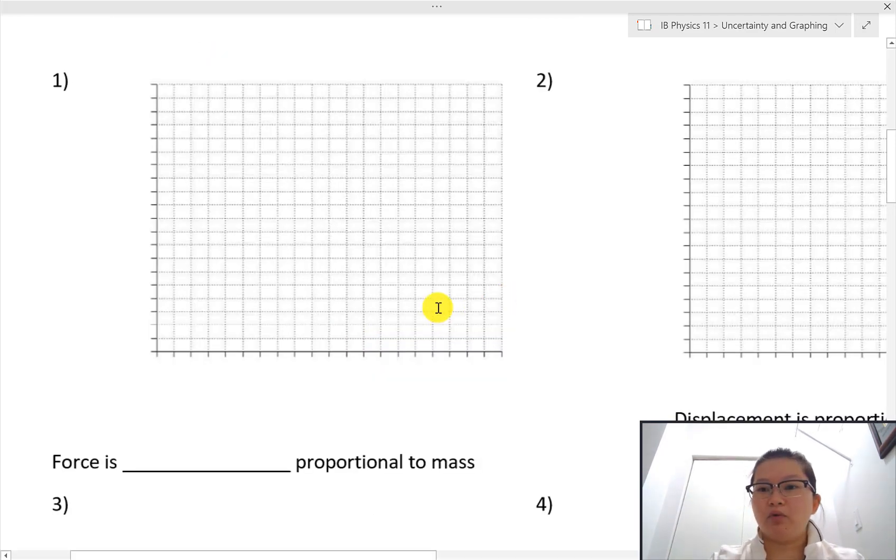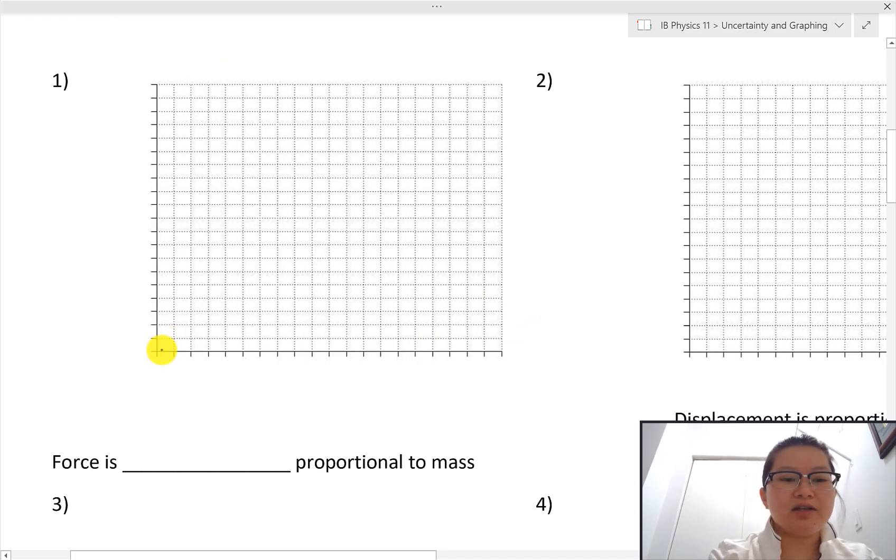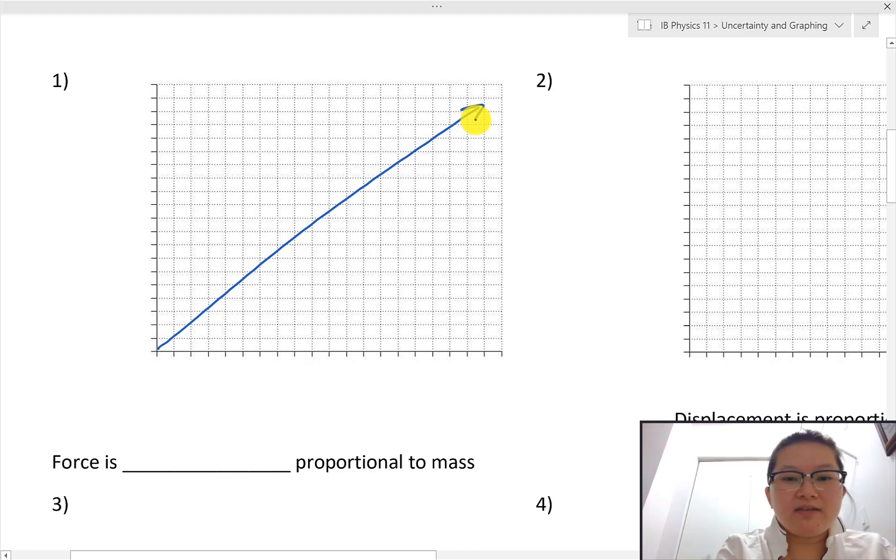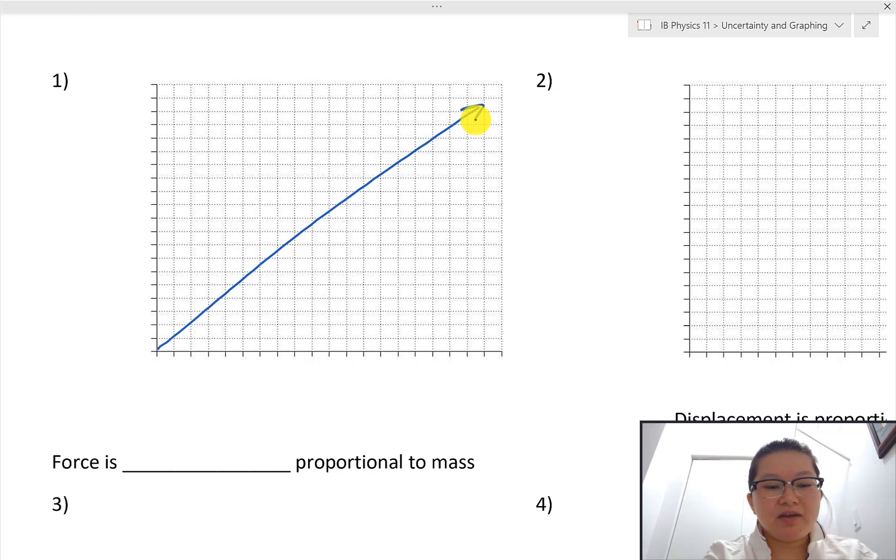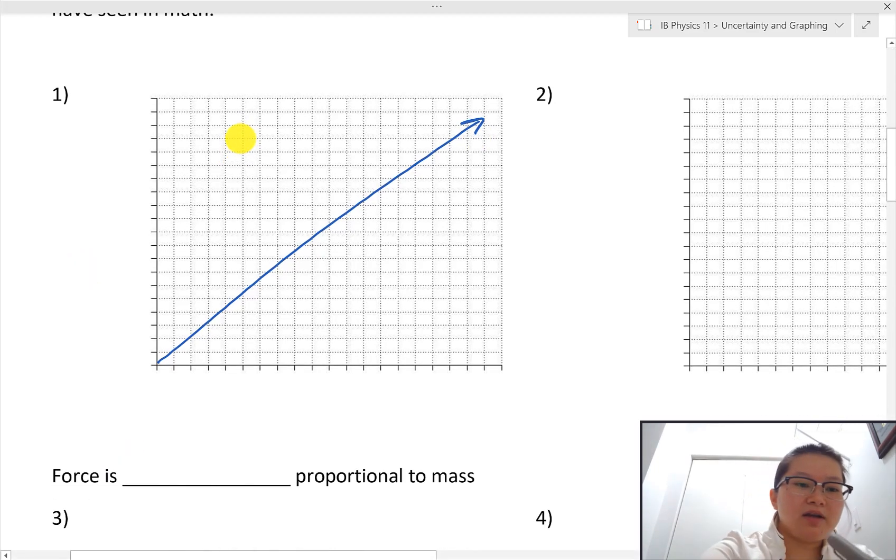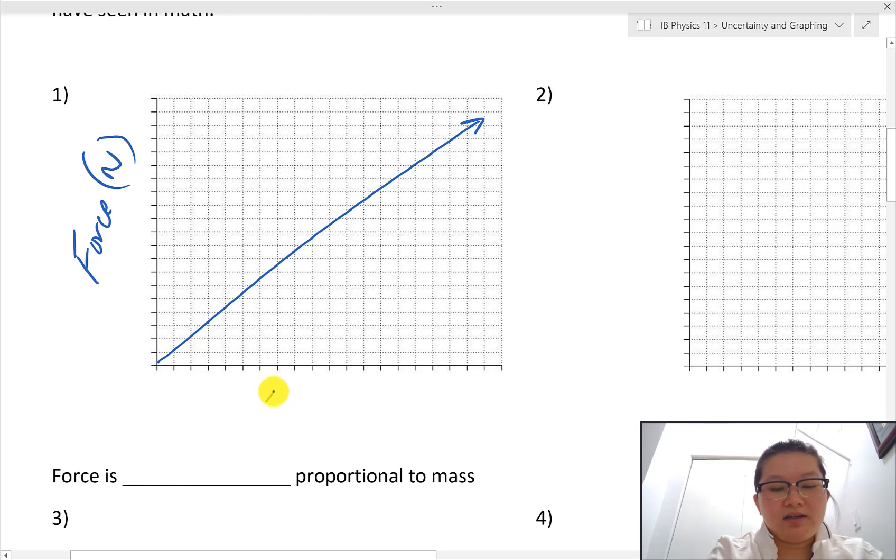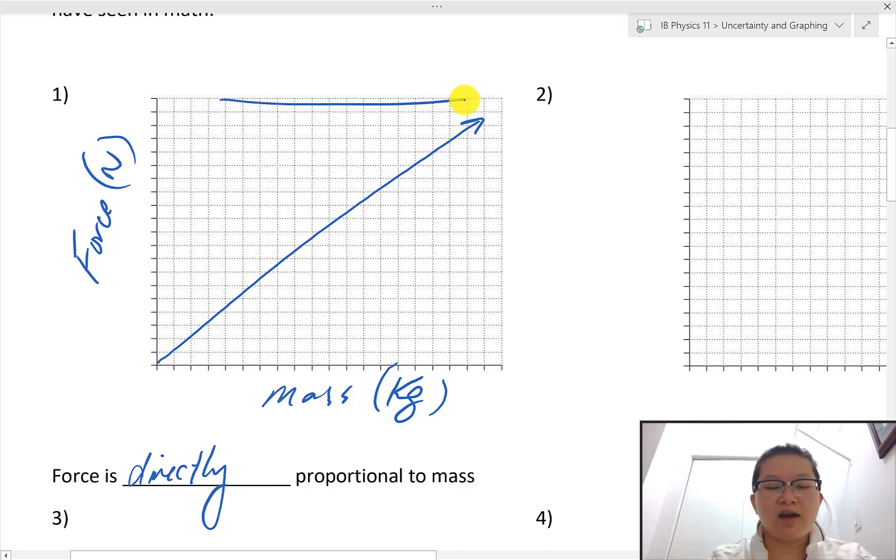Let's get started. I'm going to start with example number one, which sometimes you're going to see a relationship that looks like that, and it's a linear relationship. In this particular example we have something—in this case I'm going to write here force measured in newtons is directly proportional to the mass of an object.